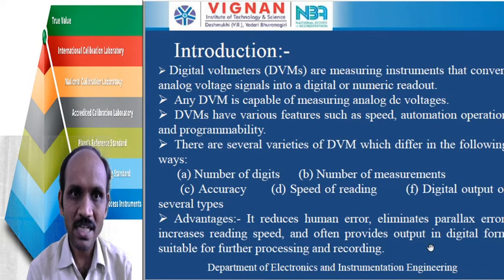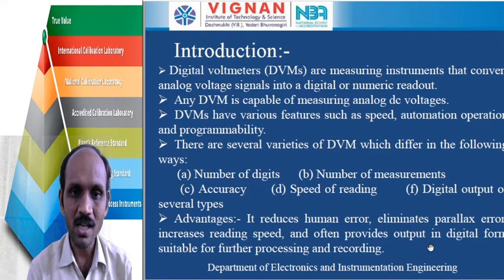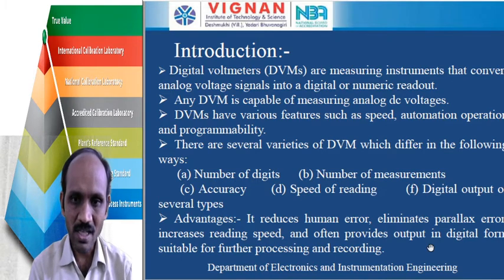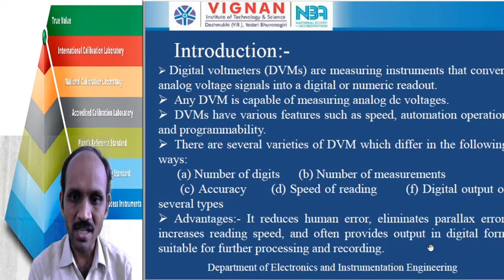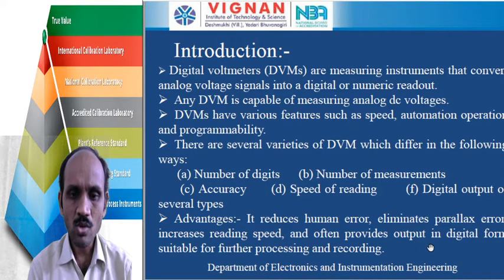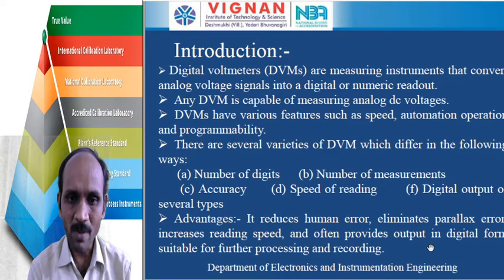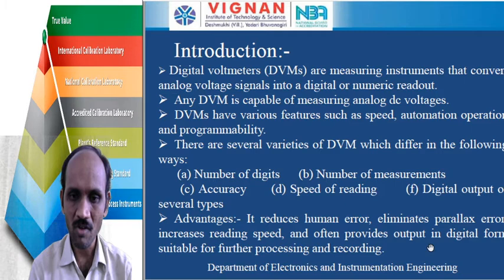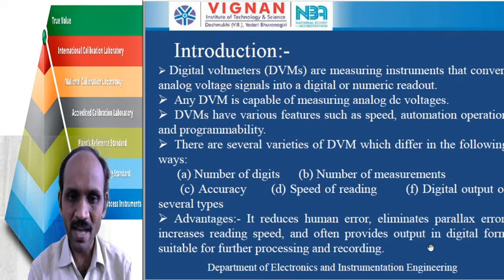A digital voltmeter is a measuring instrument that converts the analog voltage signal into a digital or numerical readout. Any DVM is capable of measuring analog DC voltages. DVMs have various features like speed, automation, operation, and programmability. All digital voltmeters differ from one another based on parameters such as number of digits, number of measurements, accuracy, speed of reading, and digital output.